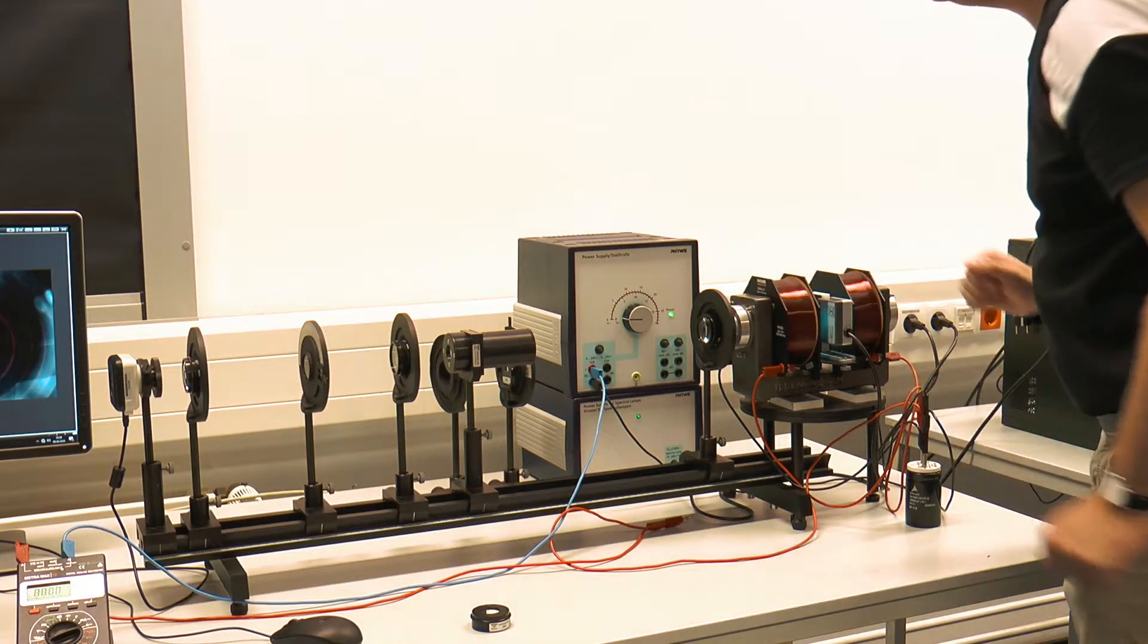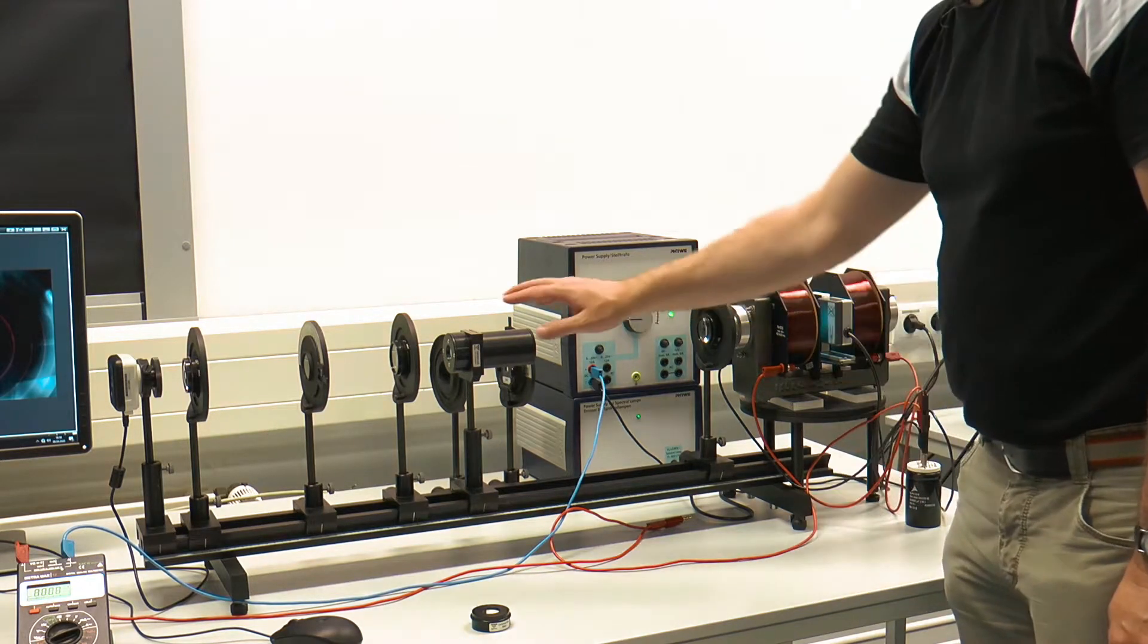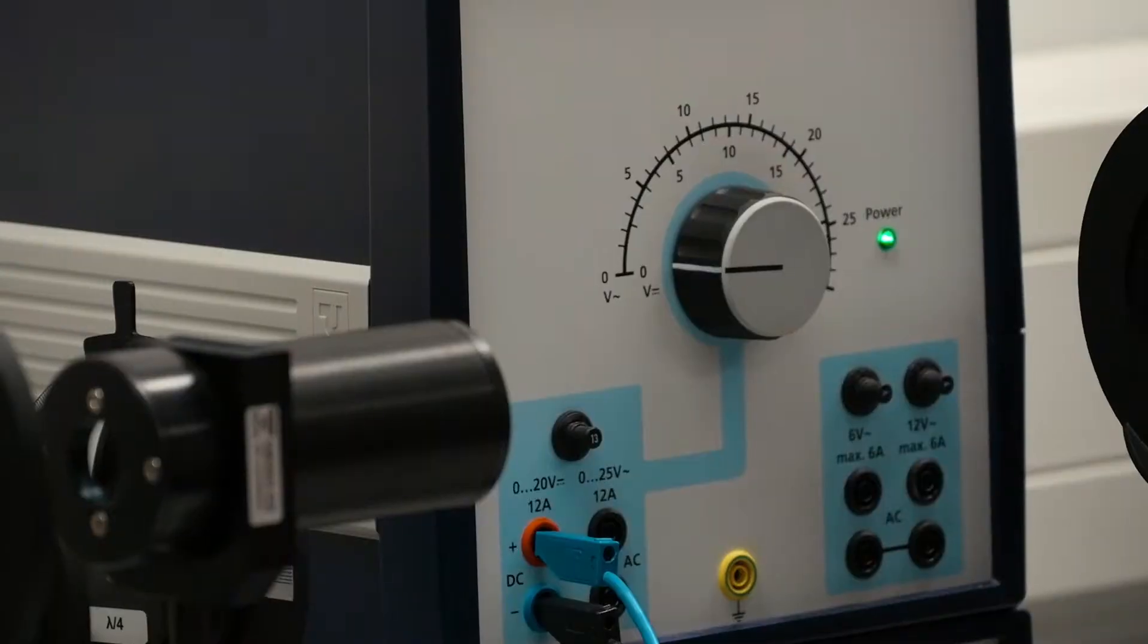Place a lens between the electromagnet and the interferometer and adjust the beam path. Set the current supply for the coil to 5 amperes.